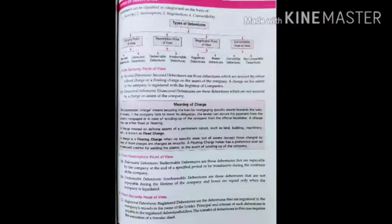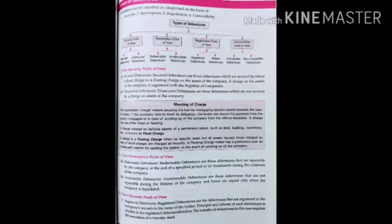From a records point of view, there are two types: registered debentures and bearer debentures. Registered debentures are those registered in the company's records in the name of the holder — principal and interest are payable to the registered holder, and transfer requires execution of a transfer deed. Bearer debentures are those not registered in the records of the company in the name of the holder.